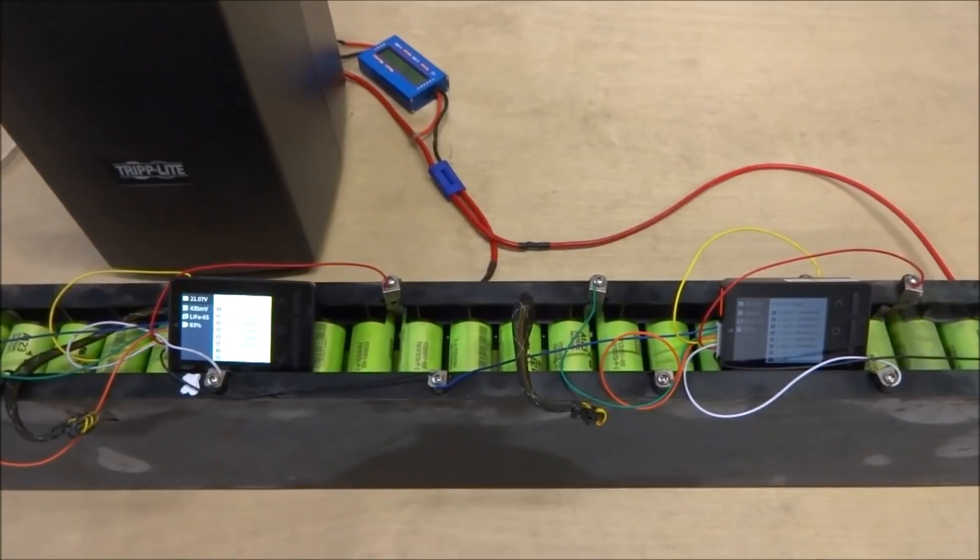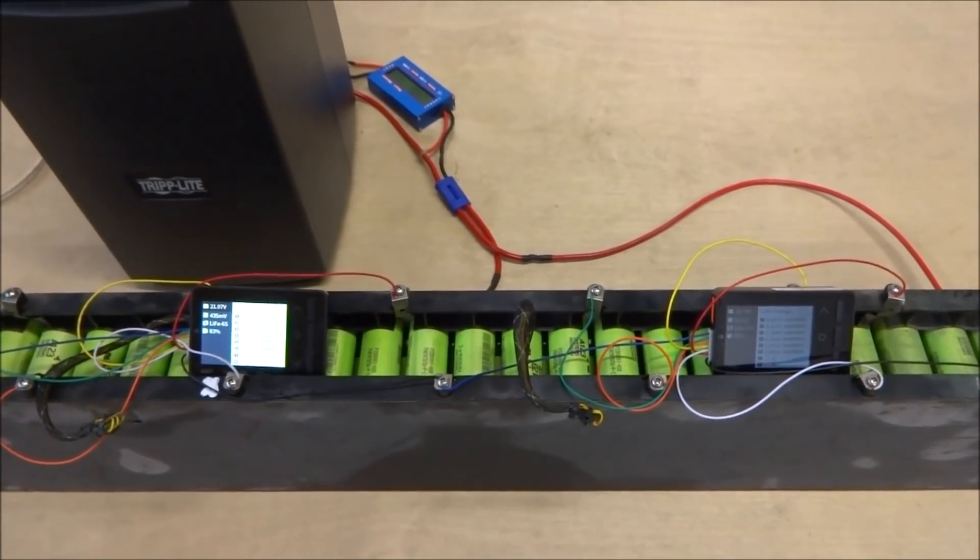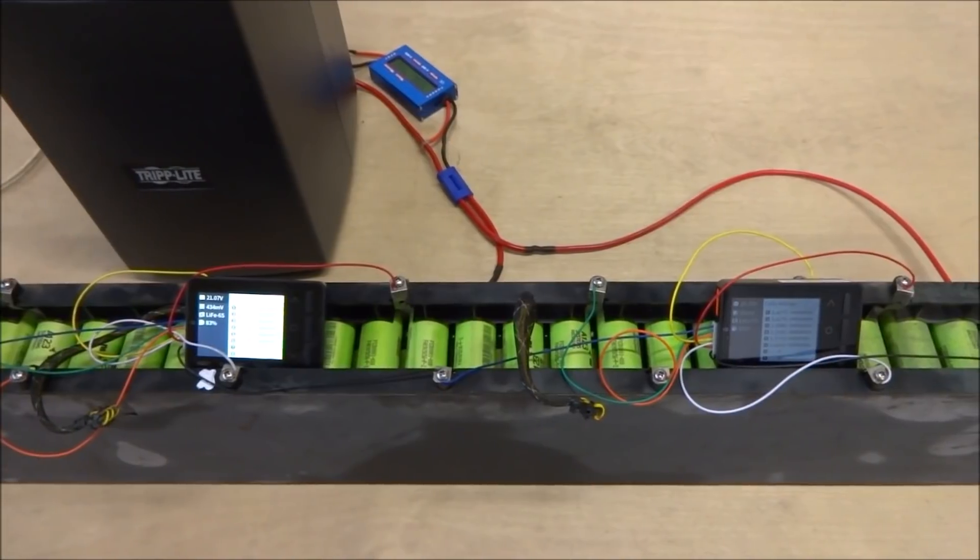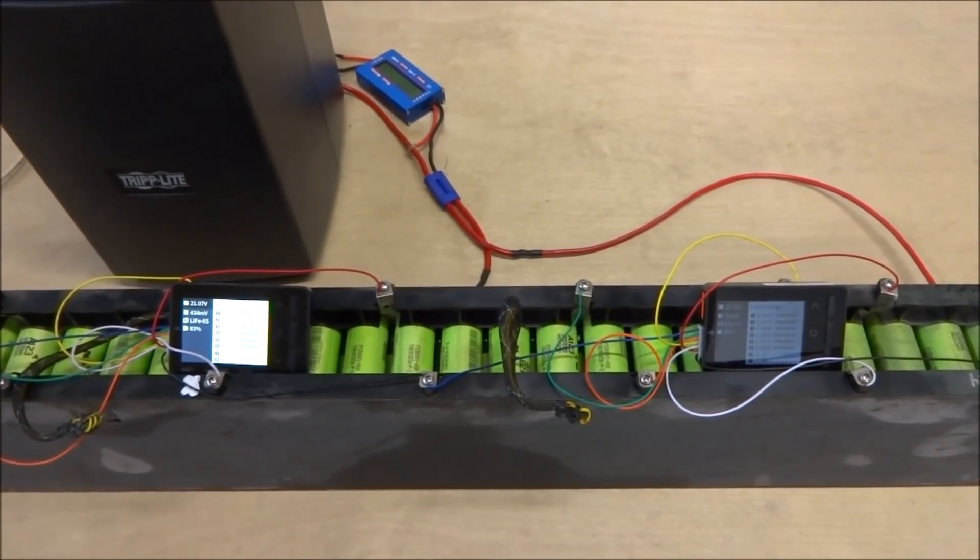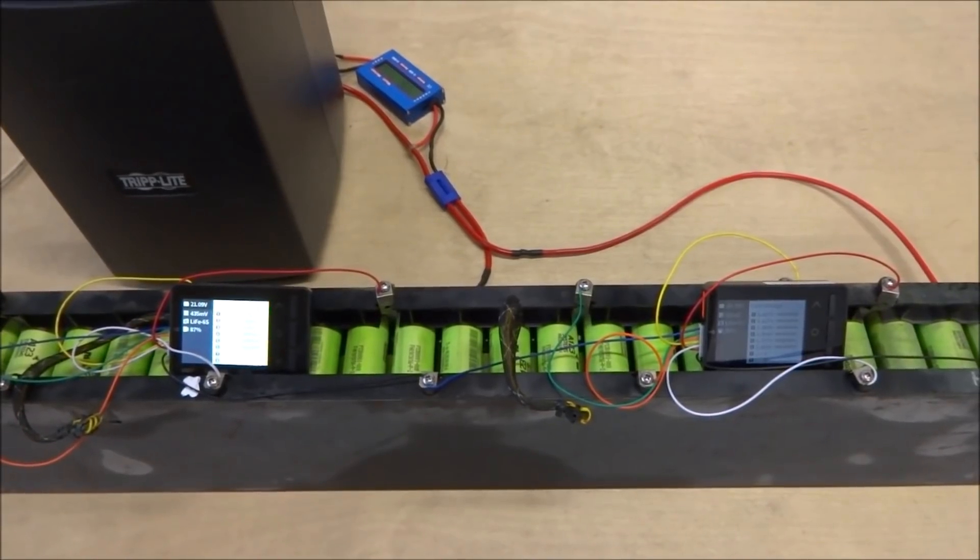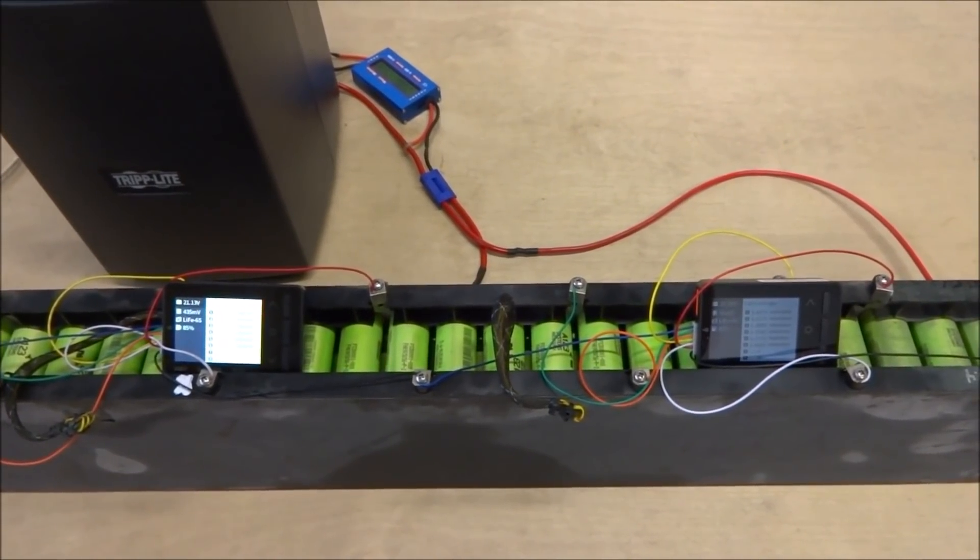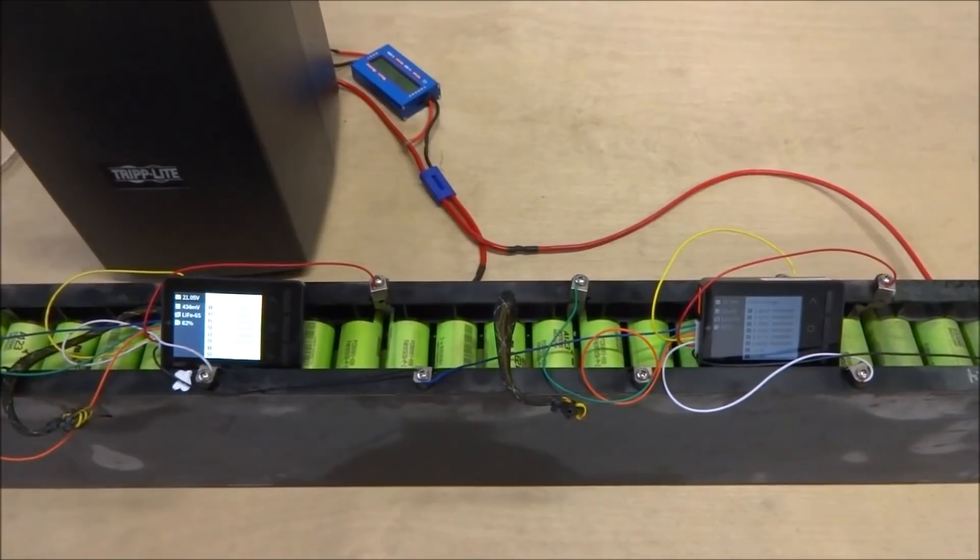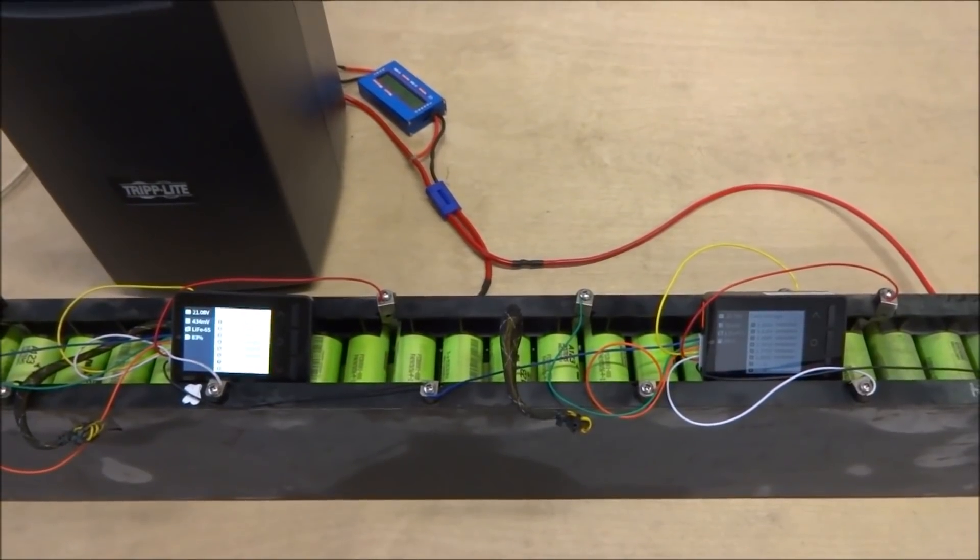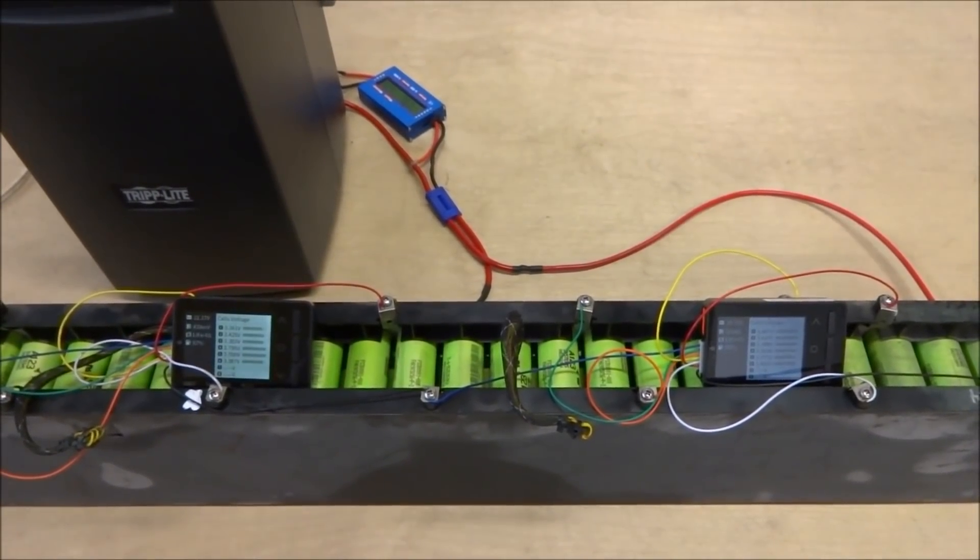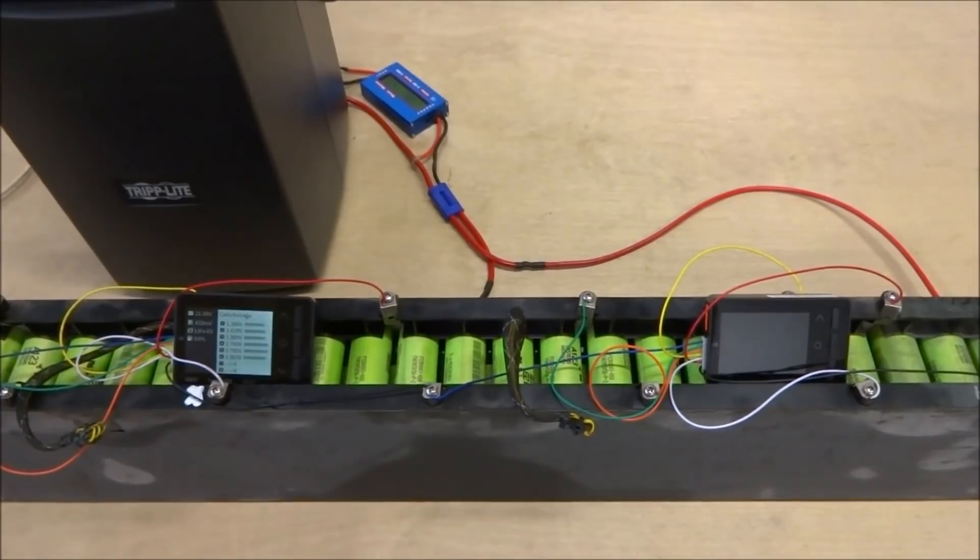So ideally, I guess for UPS's a top balance would probably be better because you will very rarely be going down to zero voltage or fully discharging the batteries, only when there's a long power outage. Most of the times the cells will be sitting at a full charge level, so I think what I will do is go ahead and do a discharge test and then recharge the batteries and balance them at the top.